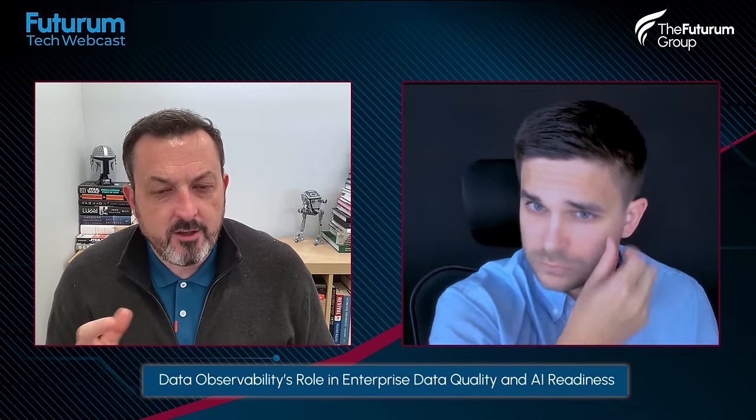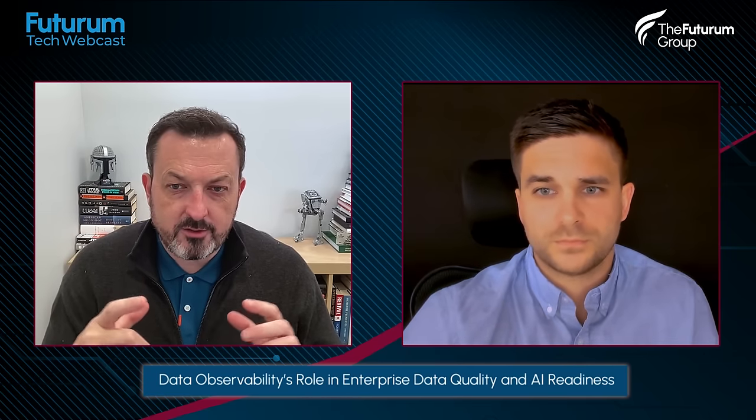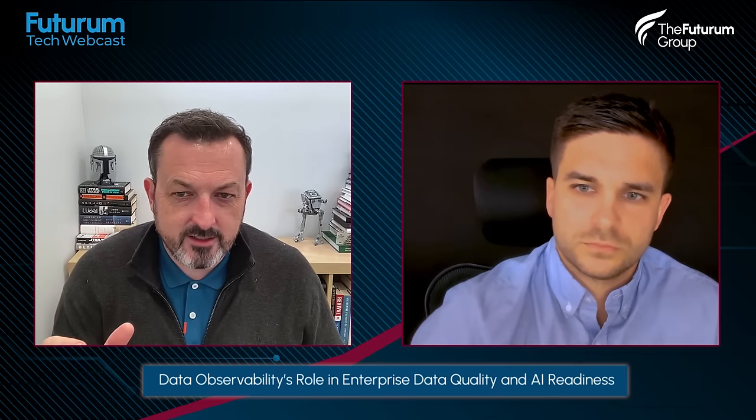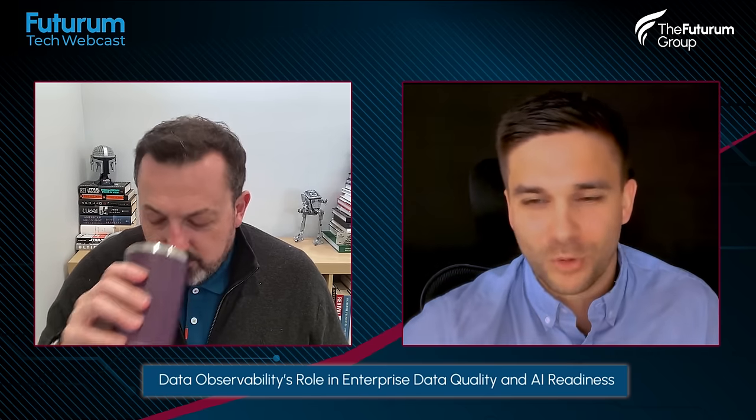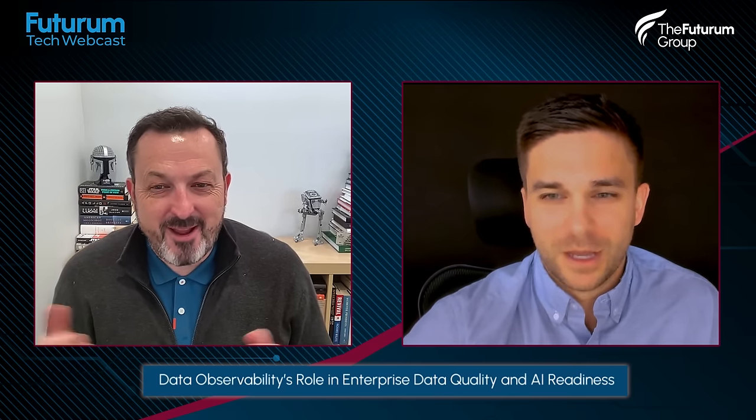That observability space was primarily for security and operations teams, and it's interesting to see it bleeding across into the data space. One of the big areas we're seeing — especially with AI — is data quality. Where does data observability play from a data quality perspective? There are some pretty cool memes out there about your AI strategy getting swatted down by poor data quality.